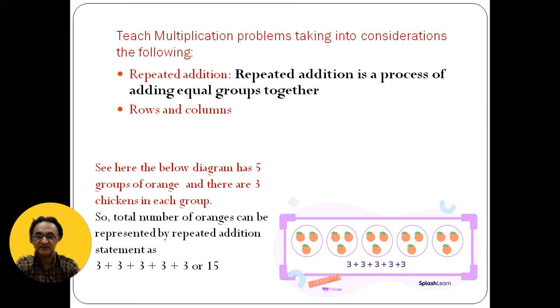First, let's discuss repeated addition. You can teach multiplication by adding the same numbers or same quantities. For example, to get 15, you can see here there are three oranges in each circle.